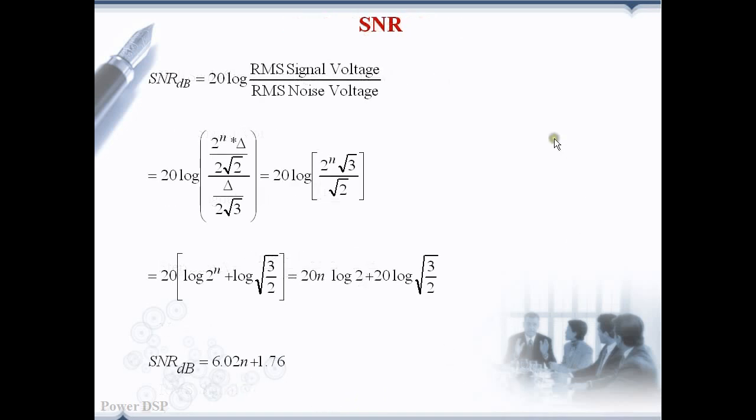Now we can find the SNR by substituting the RMS signal voltage and RMS noise voltage in this equation. We cancel del by 2 in the numerator and denominator. We can simplify it further using the formula log mn is equal to log m plus log n. Multiplying the 20 inside and substituting the value for log root of 3 by 2 we get the final SNR equation 6.02 N plus 1.76.